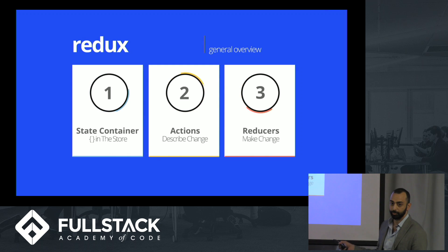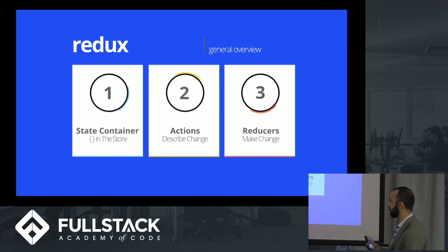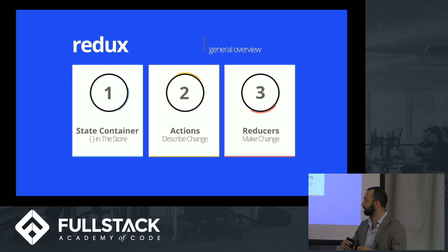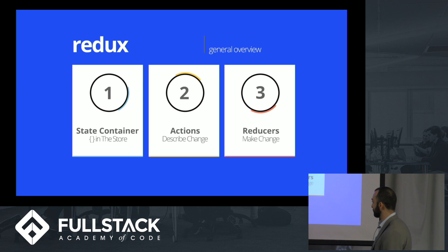There are basically three things in Redux. I'm keeping this very agnostic and basic because it is a very basic framework — there are extra complexities when you add React or Angular. But there are three things: a state container, which holds your JavaScript object in the store; actions, which describe the change happening to your state; and reducers, which are functions that actually make the change and create a new state.